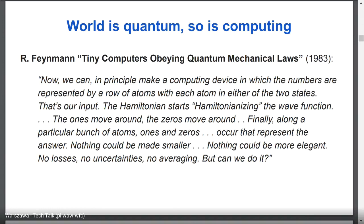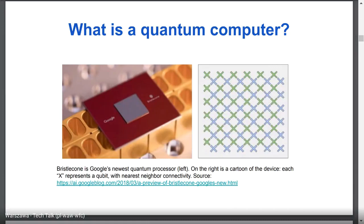Feynman is also considered one of the fathers of quantum computing. He said we can in principle make a computing device where numbers are represented by a row of atoms, each in either of two states — zero or one. The Hamiltonian starts evolving the wave function, the ones and zeros move around, and finally ones and zeros along a particular bunch of atoms represent the answer. Nothing could be made smaller, nothing more elegant. That was more than 30 years ago, and nowadays we know that we can probably do it, at least in a relatively small scale.